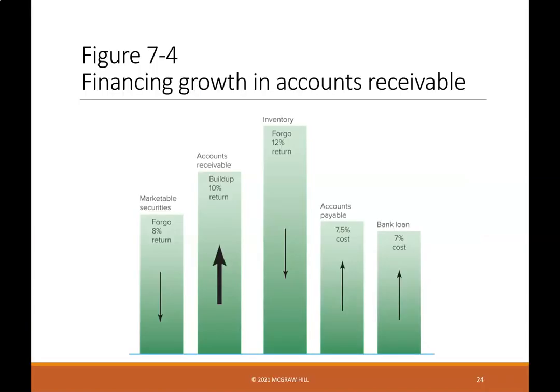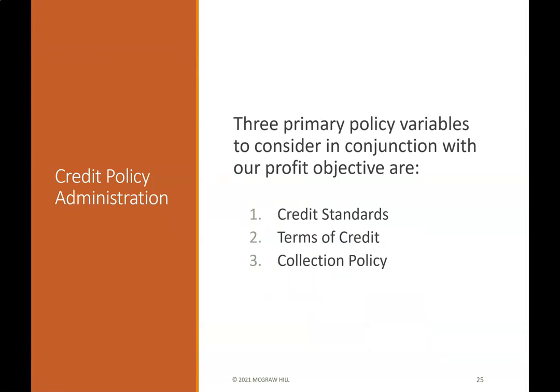Figure 7-4 illustrates the financing of growth in accounts receivable, showing marketable securities, accounts receivable, inventory, accounts payable, and bank loans. Credit policy administration involves three primary policy variables to consider in conjunction with the profit objective: (1) credit standards, (2) terms of credit, and (3) collection policy.